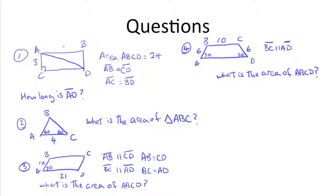The area of ABCD is 24, AB and CD are equal to each other, and AC and BD are equal to each other. Here we see that AC is 3, so BD has to be 3. How long is AD, which looks like it's the diagonal of this rectangle? We know it's a rectangle because all the sides are equal, and this is a right angle.